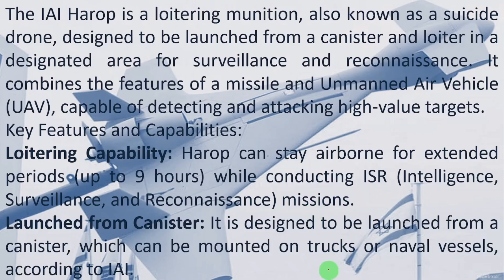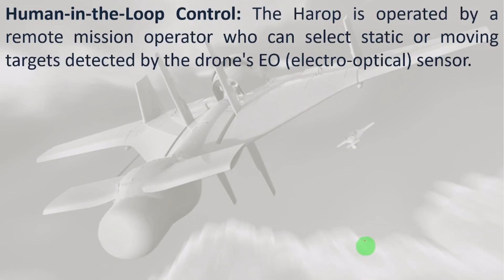Launched from canister: HAROP is designed to be launched from a canister which can be mounted on trucks or naval vessels, according to IAI of Israel. Human-in-the-loop control: HAROP is operated by a remote mission operator who can select static or moving targets detected by the drone's EO — electro-optical sensor — which senses and identifies targets.